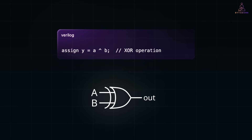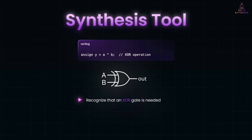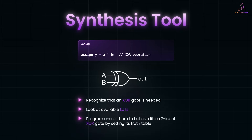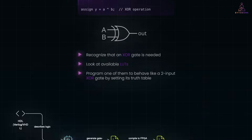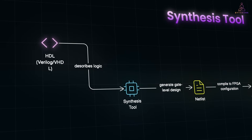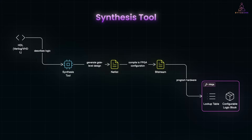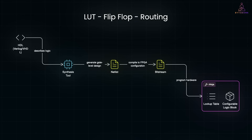For example, here is a Verilog code. You write this code in Verilog and the synthesis tool will recognize that an XOR gate is needed. It will look at available LUTs and program one of them to behave like a two-input XOR gate by setting its truth table accordingly. A synthesis tool is software that takes your HDL code — written in Verilog or VHDL — and translates it into a hardware circuit, figuring out how to configure LUTs, flip-flops and routing inside an FPGA to match your design.